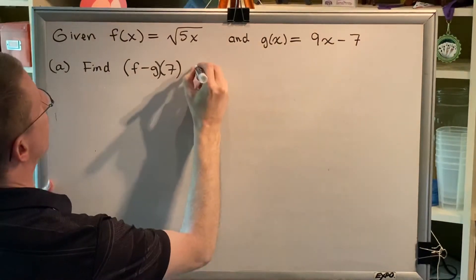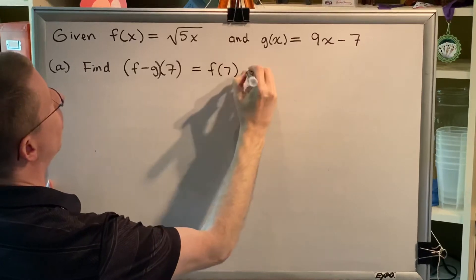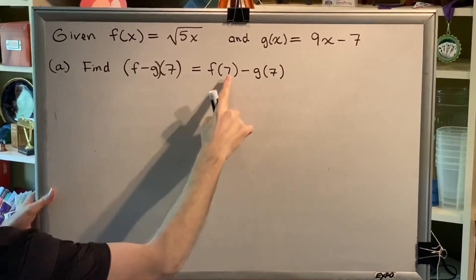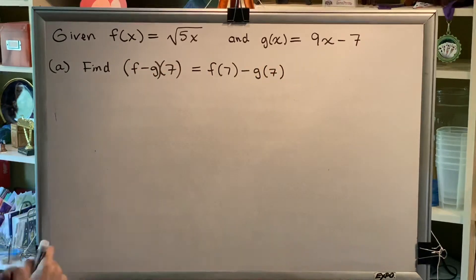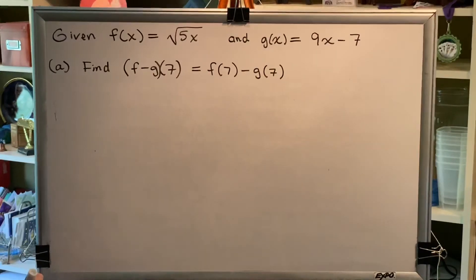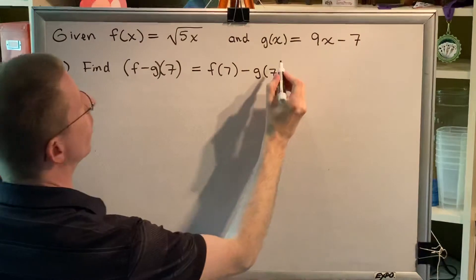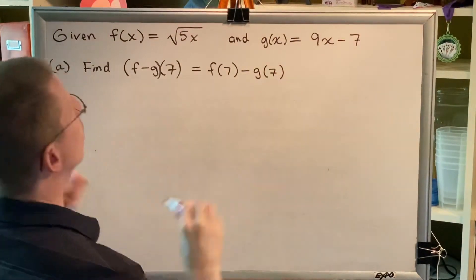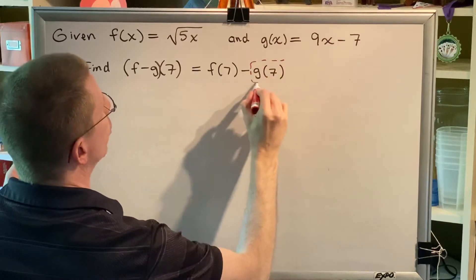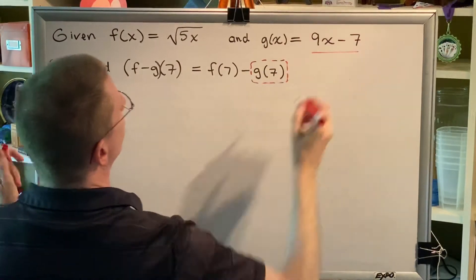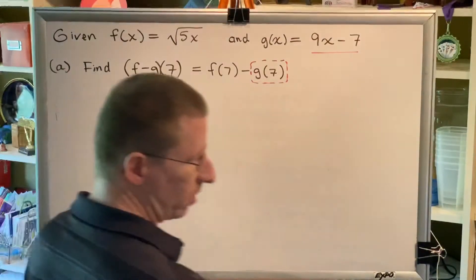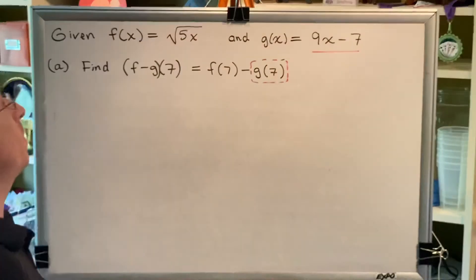So this is saying the same thing as f(7) minus g(7), which means we just need to plug 7 in for all of the x's in both of these functions. However, we have to be careful with this one because when you subtract, if the thing you're subtracting contains more than one term, then you must use parentheses to ensure that the whole thing is subtracted instead of just the first piece of it.